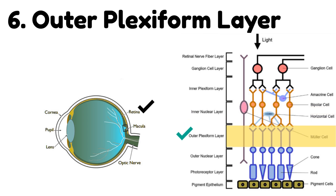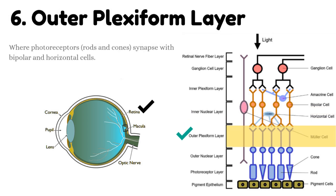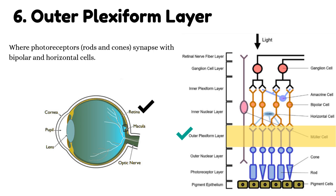Number 6: Outer plexiform layer. This is the layer where photoreceptors — rods and cones — synapse with bipolar and horizontal cells.